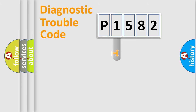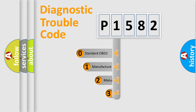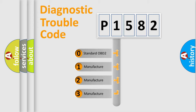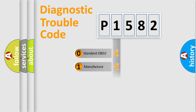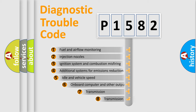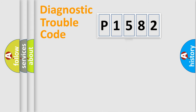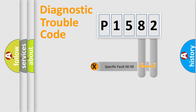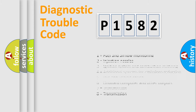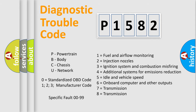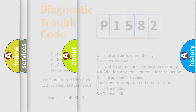This distribution is defined in the first character of the code. If the second character is expressed as zero, it is a standardized error. In the case of numbers 1, 2, or 3, it is a manufacturer-specific error. The third character specifies a subset of errors. This distribution is valid only for the standardized DTC code, and only if the second character code is expressed by the number 0.